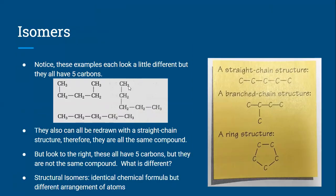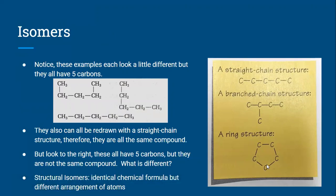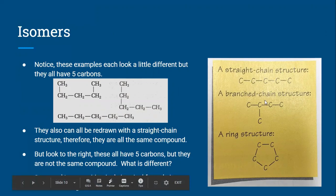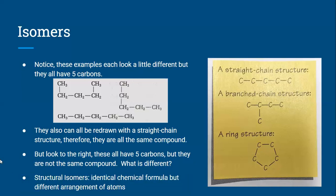Isomers. These examples each look a little different, but they all have five carbons. If you redrew them into a straight chain, you'd see they're all connected the same way and form a straight chain. But some examples still have five carbons yet are different — their connections are different, making them different compounds. The first example is a straight chain, the second has a branch coming off of it — a branched chain — and the third forms a ring or enclosed shape, called a ring structure. These are considered isomers. Structural isomers have an identical chemical formula but different arrangements of atoms, and their properties will be different as well.